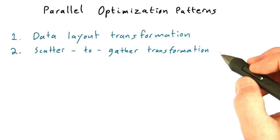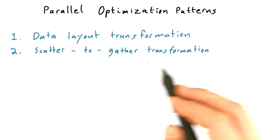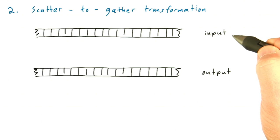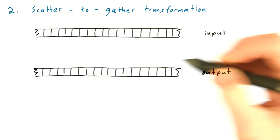So the next technique in Stratton's optimization taxonomy is called the scatter-to-gather transformation. Most interesting computations involve a step where many input elements contribute to the computation of an output element.